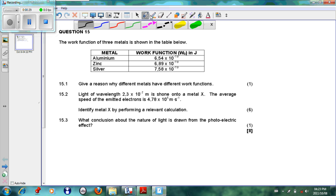If you look here, we see that aluminium's work function is 6.54 times 10 to the minus 19, zinc is 6.89, silver 7.58. So why do they have different work functions? The reason is basically that to begin with, we can say that each metal has its own ionization energy, each metal has different ionization energy.